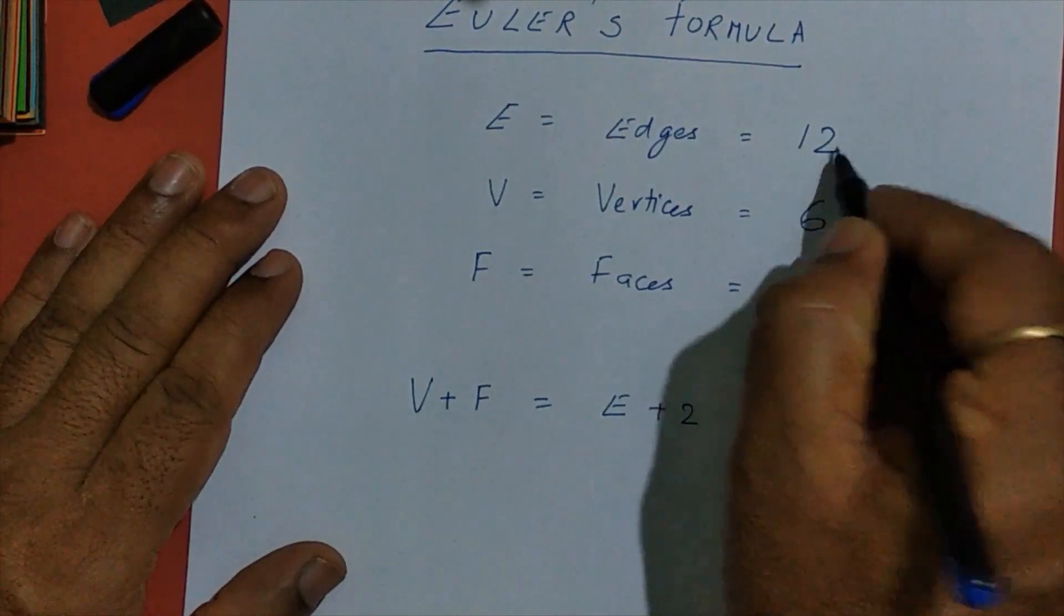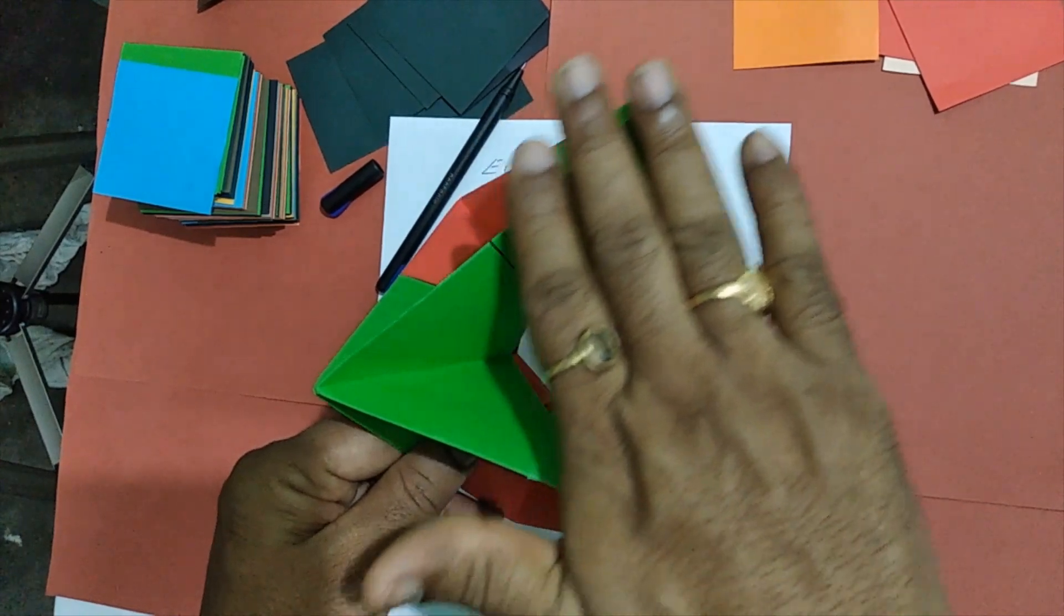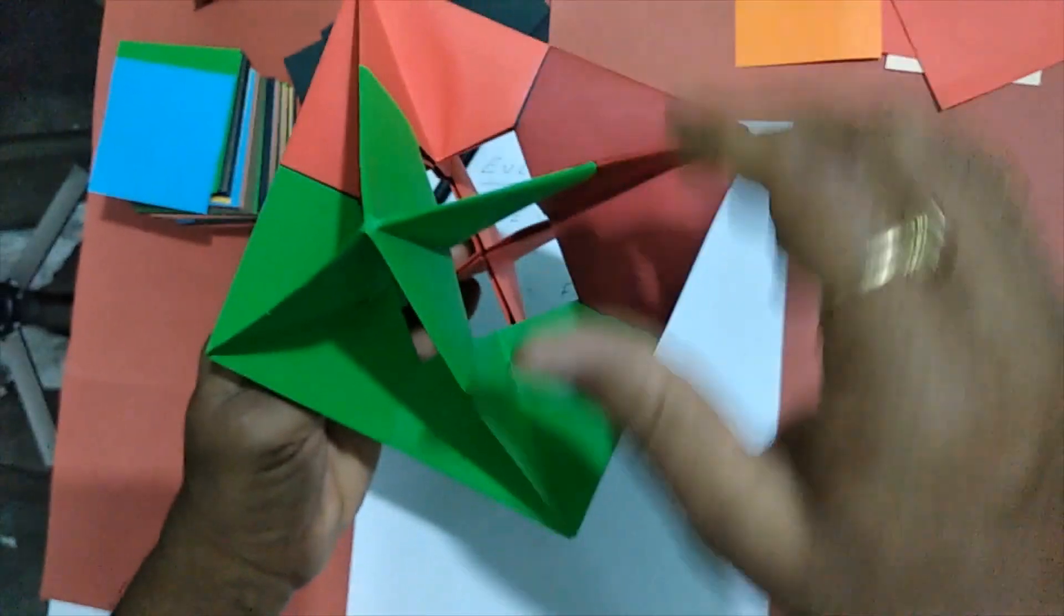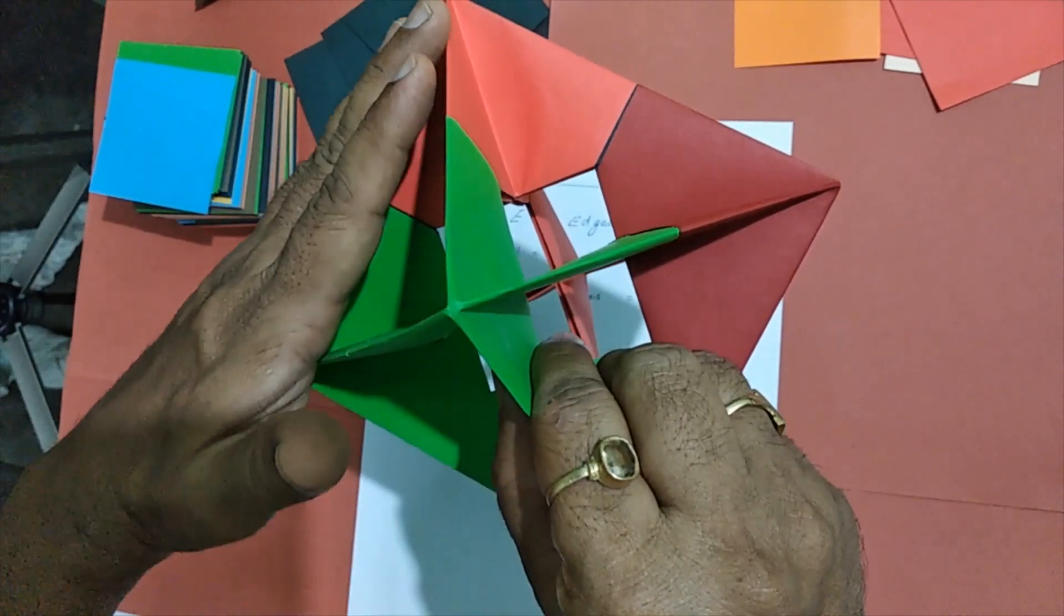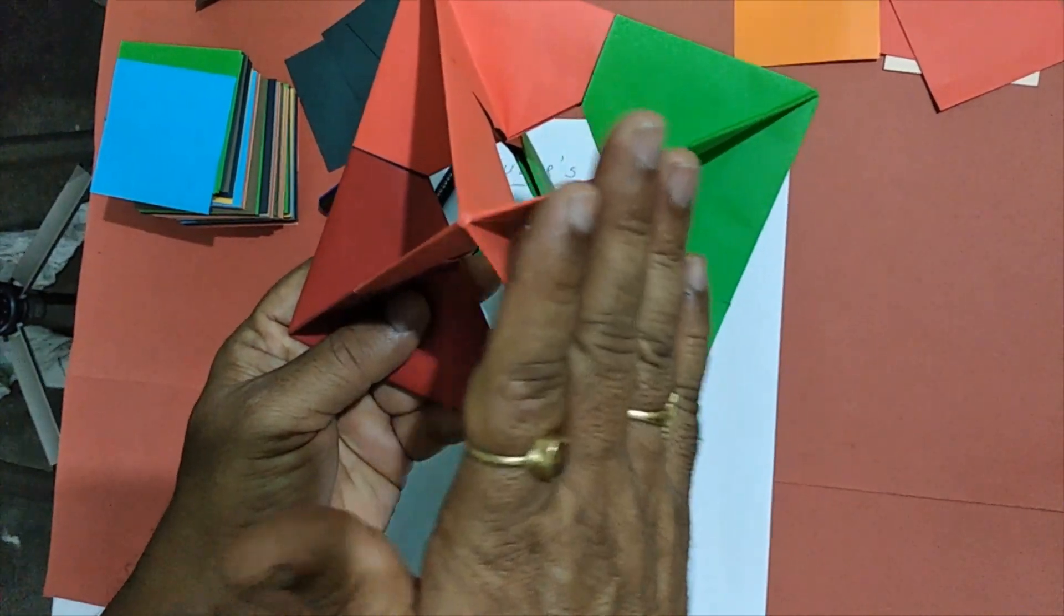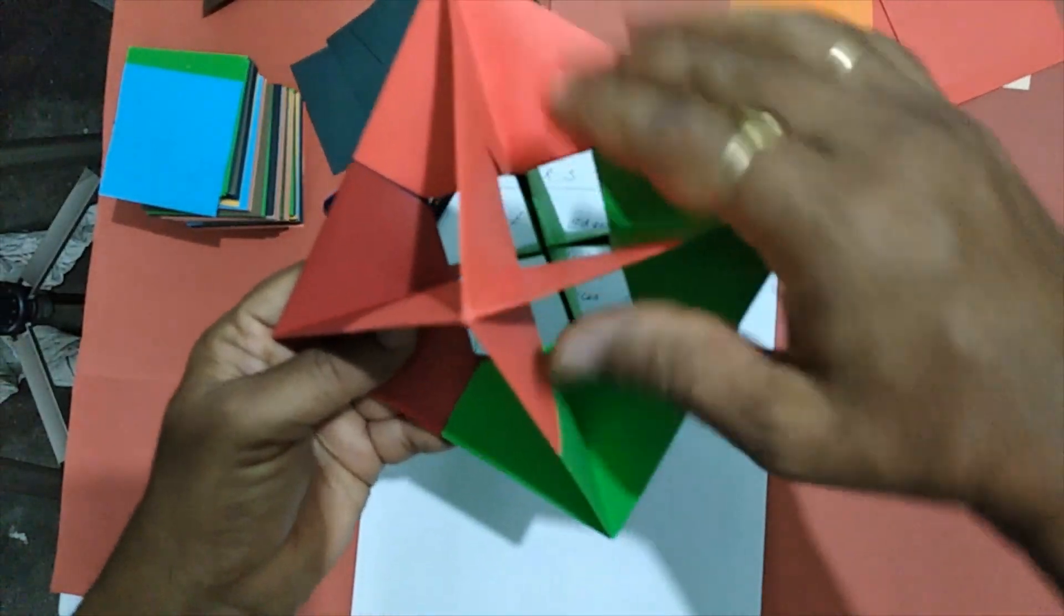Now coming to the faces. This is an equilateral triangle. Four faces on this side. And four faces on the other side, totaling to eight faces. So the number of faces, F is equal to eight.